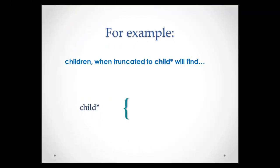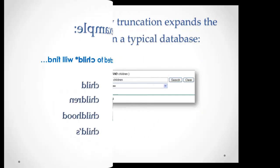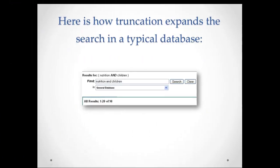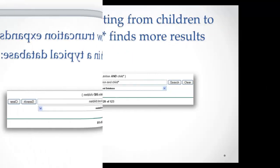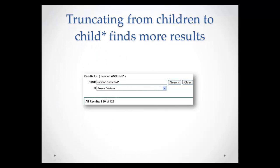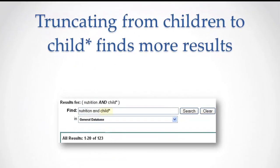For example, the word children, when truncated as child*, will find child, children, childhood, and childs. Truncation will expand your search in a typical database. A search for nutrition and children brings up 98 results. By truncating the word children and searching nutrition AND child*, your results increase to 123.